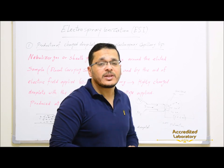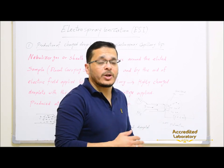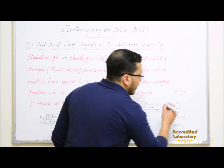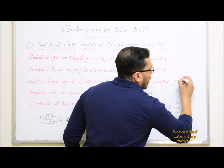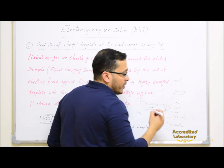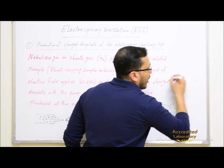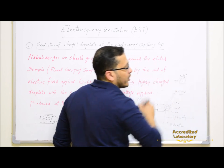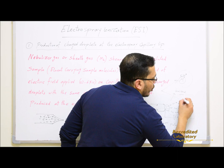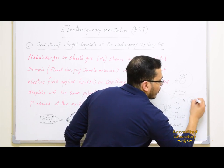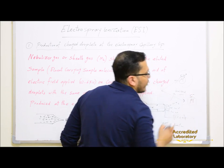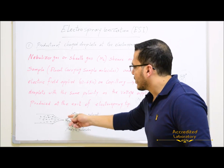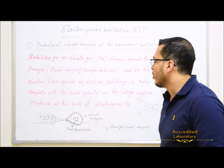If the voltage applied is positive, the charged droplets will have positive polarity. If the voltage applied is negative, the charged droplets will have negative polarity. In positive mode, the charged droplets consist of sample molecules surrounded by solvent molecules plus H-positive. In negative mode, the charged droplets consist of sample molecules surrounded by solvent molecules with negative charge. The charged parent droplet contains sample molecules surrounded by solvent molecules.